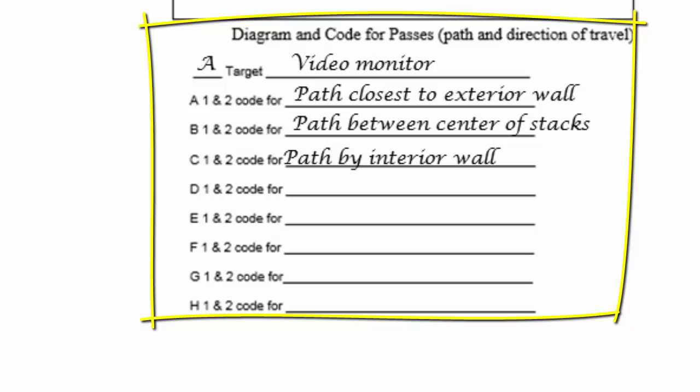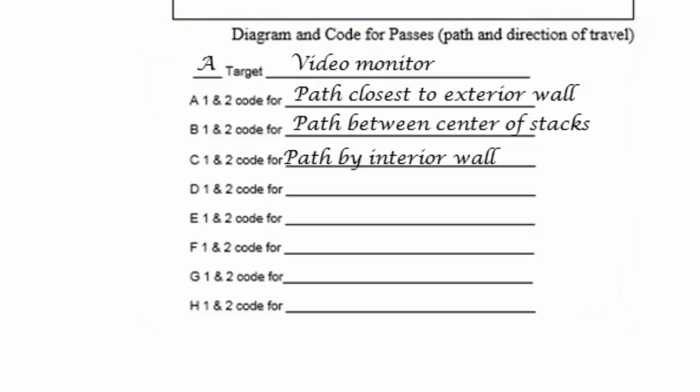Note the possible paths past your target. Each one on the coding sheet will be designated A through H and numbered 1 or 2 to indicate the direction of travel. For example, if my project calls for the paths transiting away from the main entry and exit point as A1, B1, etc., then the 2 designation of each of those paths will be when the patrons are using the same path but headed in the opposite direction toward the main entry and exit point.